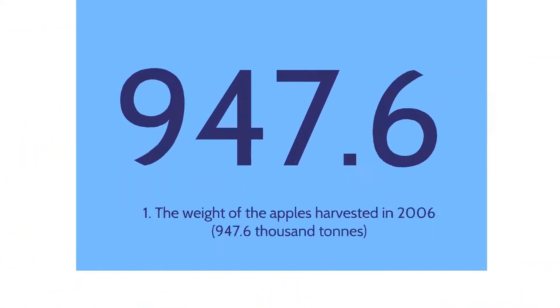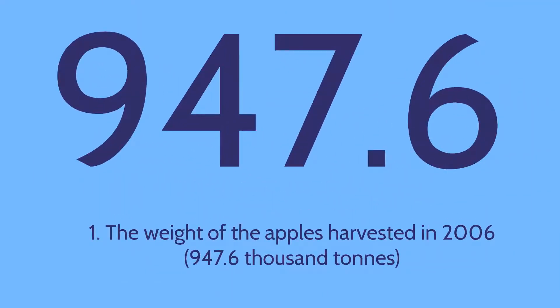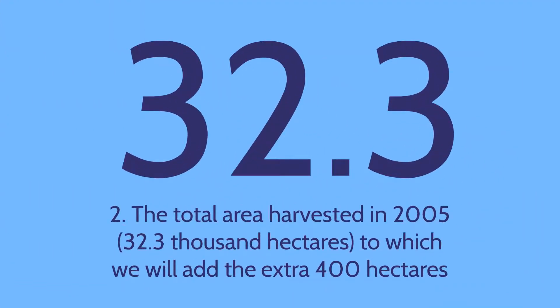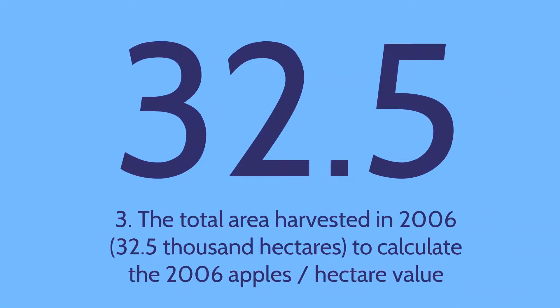1. The weight of the apples harvested in 2006: 947.6 thousand tonnes. 2. The total area harvested in 2005: 32.3 thousand hectares, to which we will add the extra 400 hectares. 3. The total area harvested in 2006: 32.5 thousand hectares, to calculate the 2006 apples-to-hectare value.